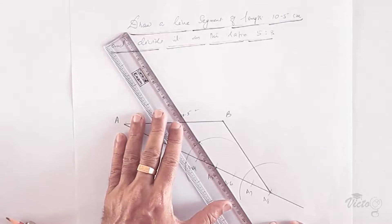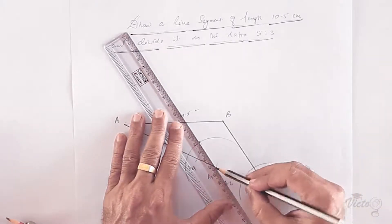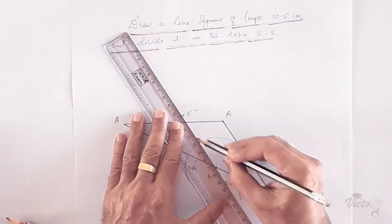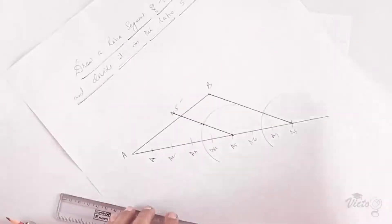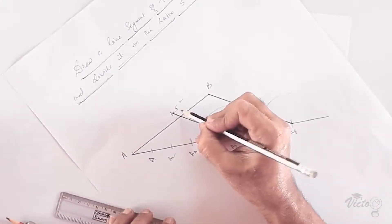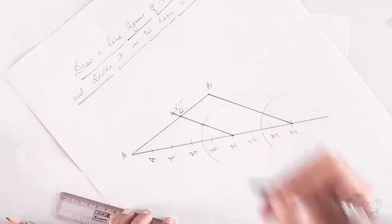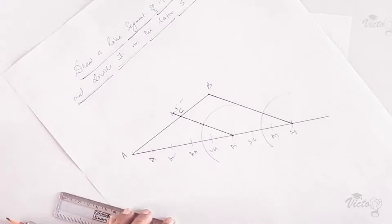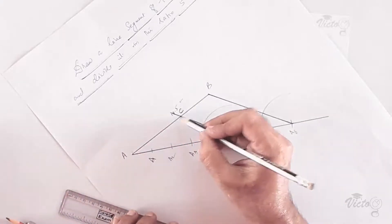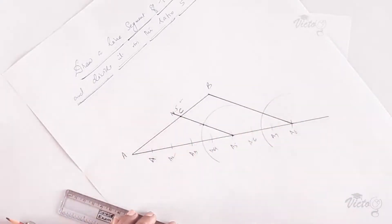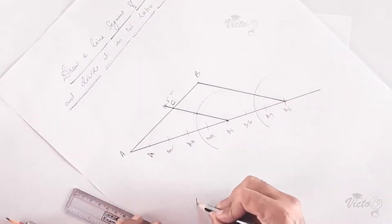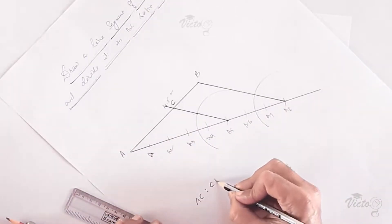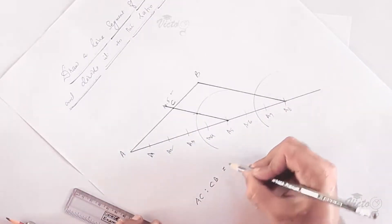We will get a line through a5 which is parallel to a8B. Mark the point where this line meets AB as C. Then AC is to CB will be in the ratio 5 is to 3.